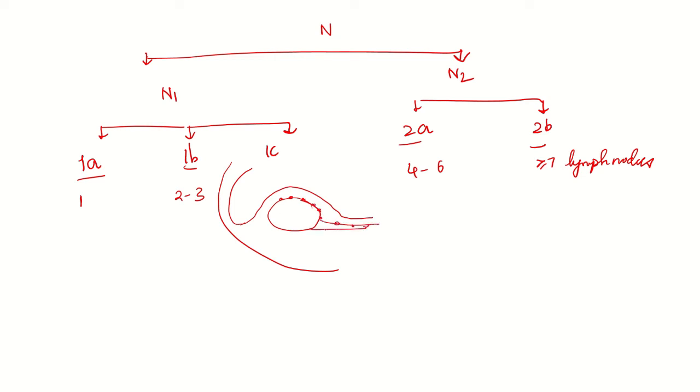Then coming to M staging. M1 is divided into 1a, 1b, and 1c. In 1a there is involvement of one distant organ. 1b is two or more distant organs.